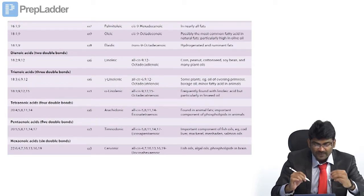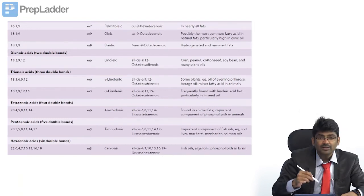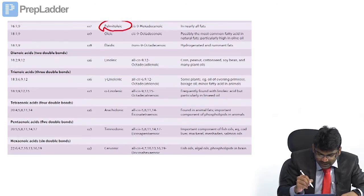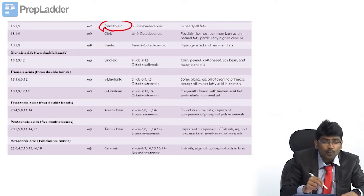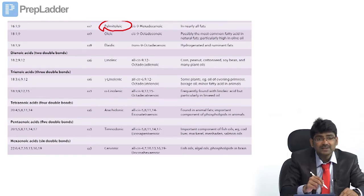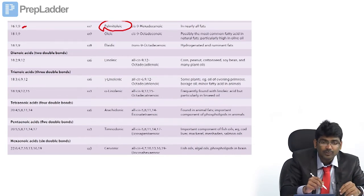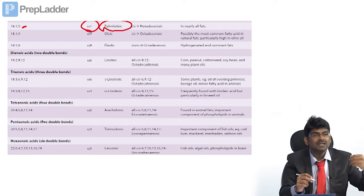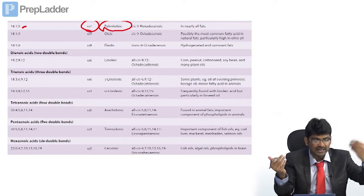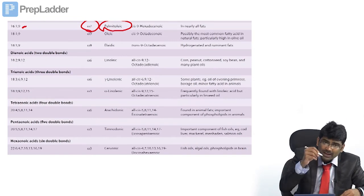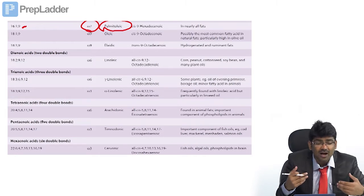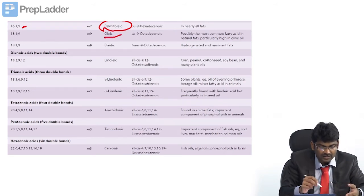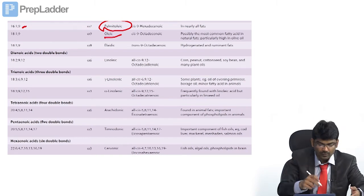The table given in Harper is very important. Here are the important fatty acids. Palmitoleic acid has 16 carbons with one double bond at position nine, making it omega-7 (16 minus 9 = 7). Oleic acid is a mono-unsaturated fatty acid with 18 carbons and a double bond at position nine — so 18 minus 9 gives omega-9. Linoleic acid has 18 carbons with two double bonds at positions nine and twelve, so 18 minus 12 = omega-6.